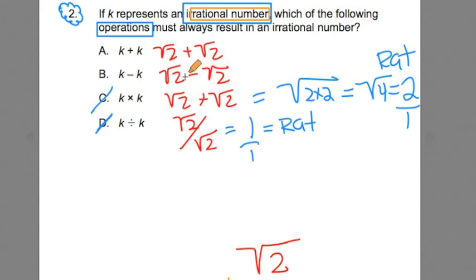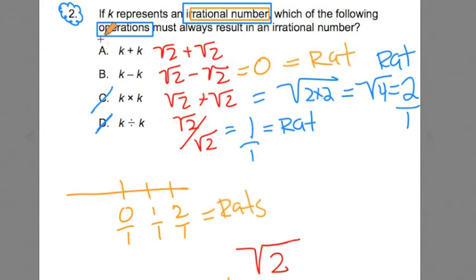Now this one right here gets you zero. Remember how we were doing this right here, this number line? Zero, one, two. All these values here, they all can be expressed as fractions, so they're all rats. This is a rat.